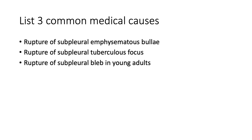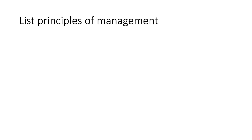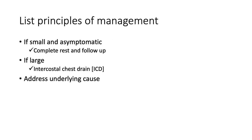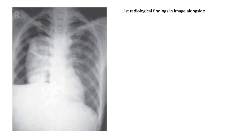Medical causes of spontaneous pneumothorax include rupture of a subpleural emphysematous bulla, rupture of a subpleural tuberculous focus, or rupture of a subpleural bleb especially in young adults. Management: if small and asymptomatic, complete rest and follow-up; if large, insert an intercostal chest drain and address the underlying aetiology.